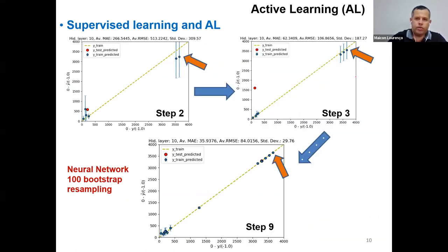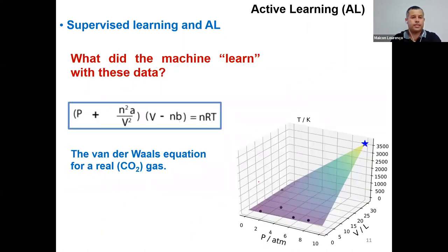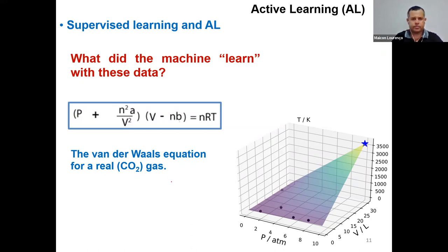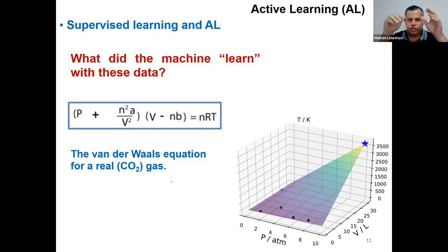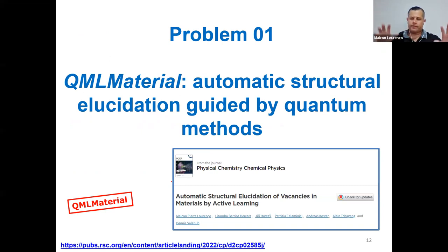If we continue these steps, even after finding the global maximum, we can have better machine learning models with improved training and test sets. What did the machine learn from this data? The Van der Waals equation for a real CO2 gas. Now we have a clear picture of what machine learning and active learning are: active learning uses machine learning with uncertainty in the prediction to make inferences for new experimental discoveries. Let's apply this to vacancies.